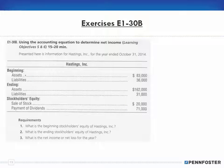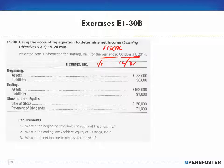So E1-30B says, using the accounting equation, determine the net income. Presented here is information for Hastings for the year ended October 31st. Now remember, the year ended October 31st means this is a fiscal year end — not a calendar year end. Calendar year goes from January 1st to December 31st.